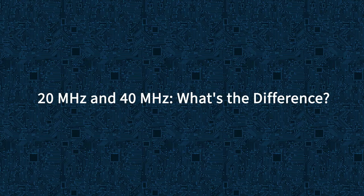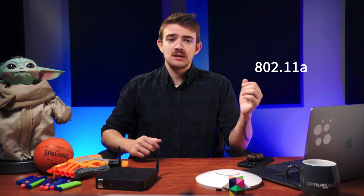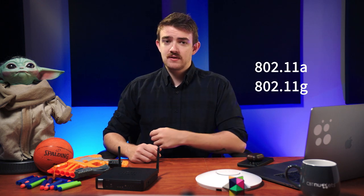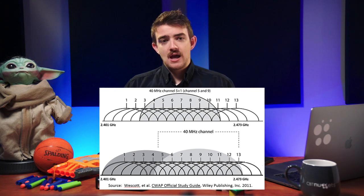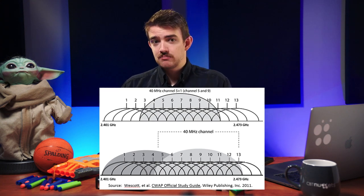Regarding 20 MHz versus 40 MHz channel widths: 20 MHz was the norm and the only option in 802.11a and 802.11g Wi-Fi. The 802.11n standard introduced channel bonding, which enabled 40 MHz widths, and 802.11ac further extended bonding to allow for 80 and 160 MHz channels. Bonding channels increases throughput, which can improve performance. The key difference between 20 and 40 MHz is throughput — 40 MHz has higher throughput thanks to channel bonding.